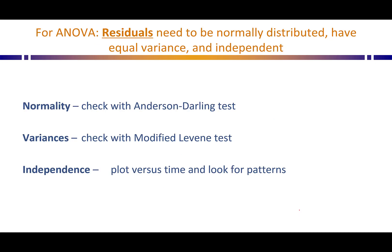To summarize: for analysis of variance, all assumption checking is on the residuals — they need to be normally distributed, have equal variance, and be independent. For normality, use the Anderson-Darling test and visually check with a normal probability plot; if not normal enough, run a nonparametric Kruskal-Wallis test instead. For variances, use the modified Levene test. For independence, plot residuals versus time and look for patterns — if you find them, there may be an influential variable not included in your model.